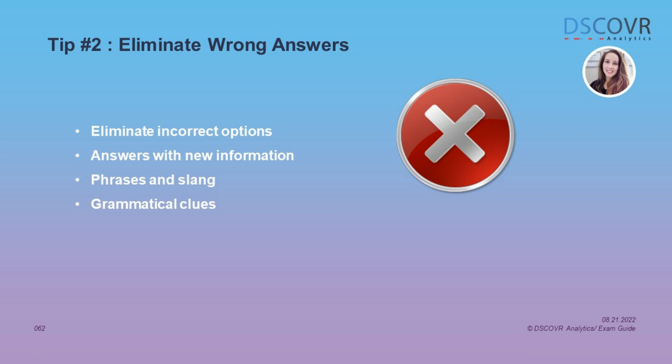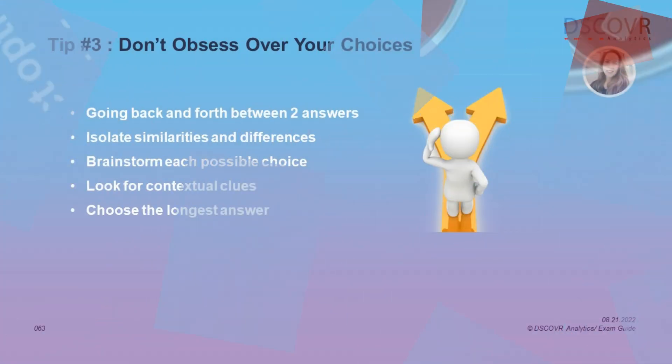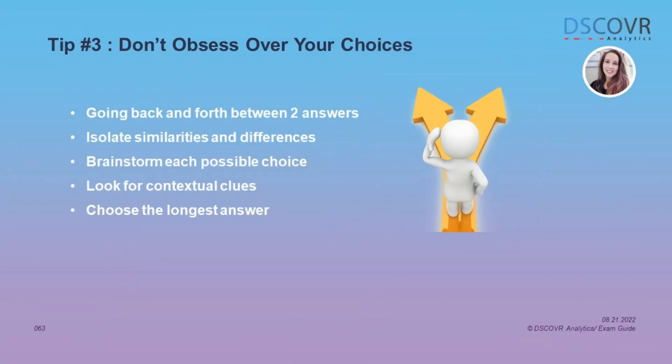Also, if one of your answers contains slang language, it's usually incorrect, so make sure you pick scientifically sounding choices. Make sure to also look for grammatical clues between the question and the choices — for example, the question and the correct answer will often have verbs of the same tense and nouns and verbs that agree. Don't waste time going back and forth between two answers. If you're down to two options, you have a 50% chance of choosing the right answer, so compare the remaining choices, isolate similarities and differences, and then make a choice. Don't obsess over one hard question when an easy question will raise your score just as much. When comparing answer choices, try to brainstorm each possible choice independently.